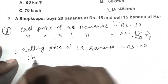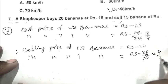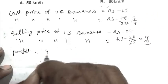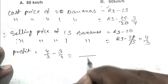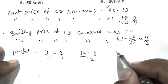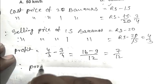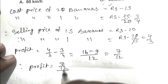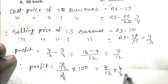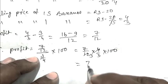Selling price of 15 bananas is Rs. 20. Selling price of 1 banana is Rs. 20 by 15, that is 4 by 3. So profit is 4 by 3 minus 3 by 4. It's become 16 minus 9 by 12, that is 7 by 12. Profit percent is profit by cost price into 100. 7 by 12 divided by 3 by 4 into 100, that is 7 by 9 into 100, seven by nine percent.